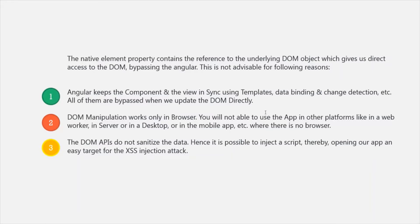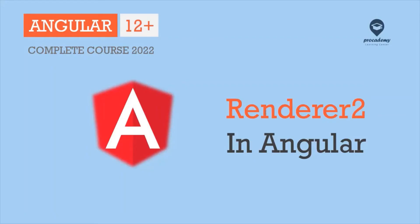Because of these reasons, accessing the DOM element directly using the nativeElement property is not advisable. In this lecture, I will show you a better way of accessing the DOM element, and that is by using Renderer. Renderer allows us to manipulate the DOM without accessing the DOM elements directly — it provides a layer of abstraction between the DOM element and the component code.